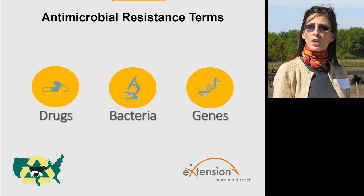The resistant bacteria are the microorganisms that used to be zapped by the specific drugs, but now are resistant. And then finally, we're hearing a lot today about genes — they're the DNA instructions that code for resistance. I think of them kind of like recipes for resistance, like your mother's banana bread recipe.